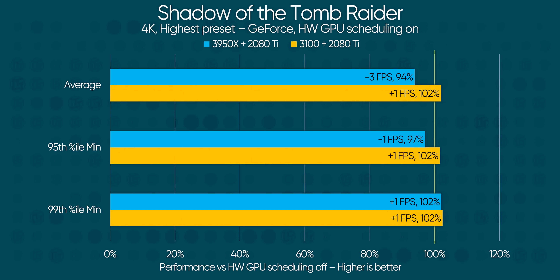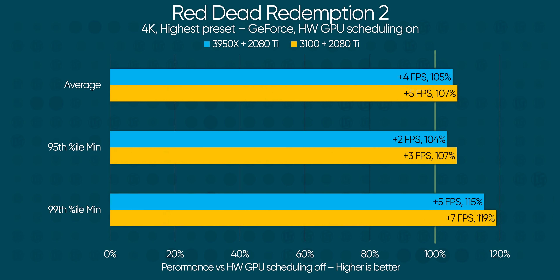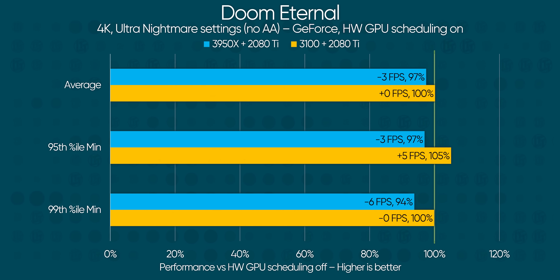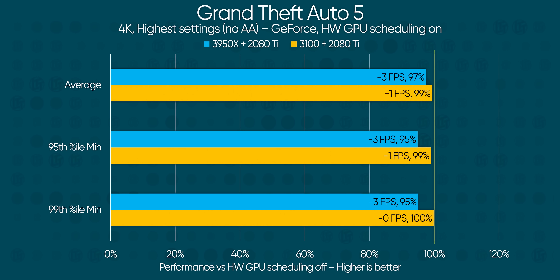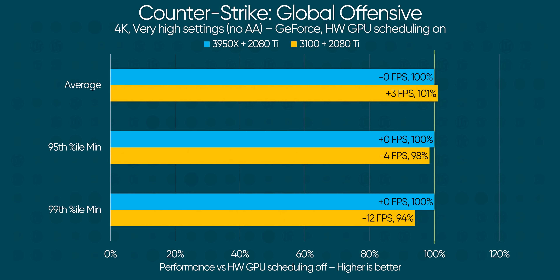Now it's time to kick things into high gear by running our games at 4K with maxed-out settings — a GPU-bound scenario. Here, Nvidia sees a reasonable improvement in performance in Shadow of the Tomb Raider and in Red Dead Redemption 2, with minimum frame rates shooting up by 15% to 20% on both of our CPUs. That's not too shabby. Doom Eternal, though, is our first major stumbling block for high-res hardware GPU scheduling, leaving our Ryzen 3 in a relatively good position, but hamstringing our 16-core chip. Finally, CSGO doesn't seem to care much what handles the scheduling on Nvidia at this resolution, which may be down to its older, comparatively primitive engine.